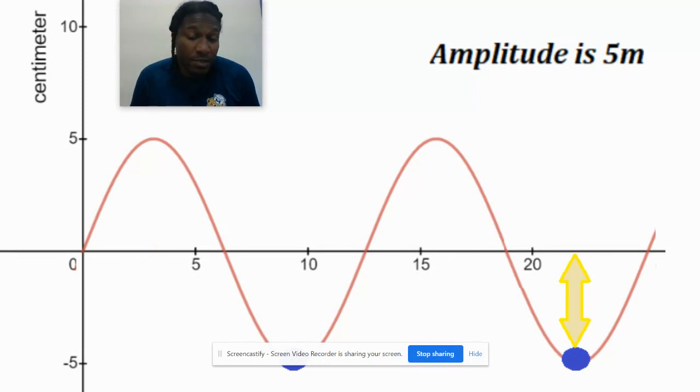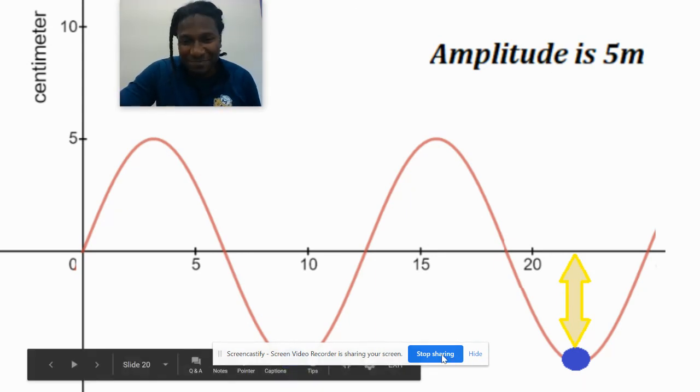The distance from that point—that maximum or minimum—to the middle will be your amplitude. And everywhere on here it's going to be five centimeters. Again, this is an error, should say centimeters.